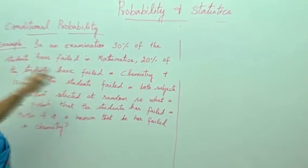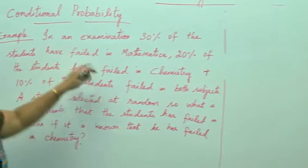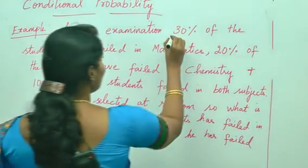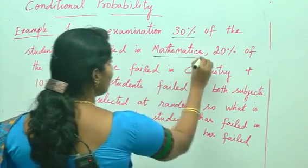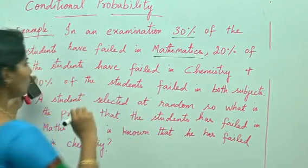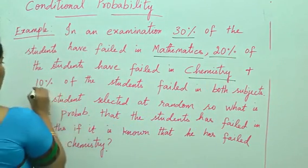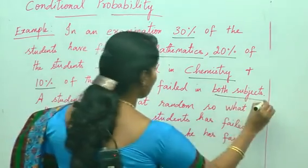In an examination, 30% of the students have failed in mathematics, 20% of the students have failed in chemistry, and 10% of the students have failed in both the subjects.